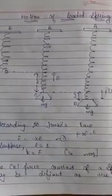According to Hooke's Law, F = −kl, where k is the force constant. F is directly proportional to −l, meaning the displacement is proportional to the applied force. The force constant of a spring may be defined as the restoring force set up per unit extension in the spring.